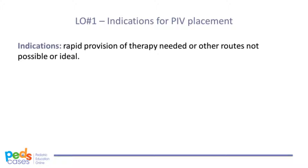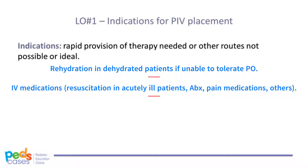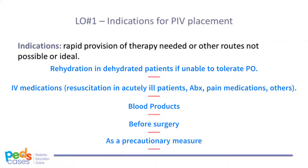Intravenous access is typically obtained in situations that require rapid provision of therapy, or in those where therapy cannot be administered as effectively via other routes. Examples include: hydrating a dehydrated patient with severe vomiting who is unable to tolerate oral intake; providing IV medications such as resuscitation medications in acutely ill patients, antibiotics, and pain medications; providing blood products; and preoperatively to allow for administration of anesthetic agents. A peripheral IV may also be established as a precautionary measure in a patient whose health is at risk of deteriorating.